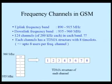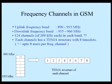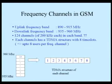The frequency channels are: uplink frequency band of 890 to 915 megahertz, downlink frequency band of 935 to 960 megahertz. There are 124 channels of 200 kilohertz each.